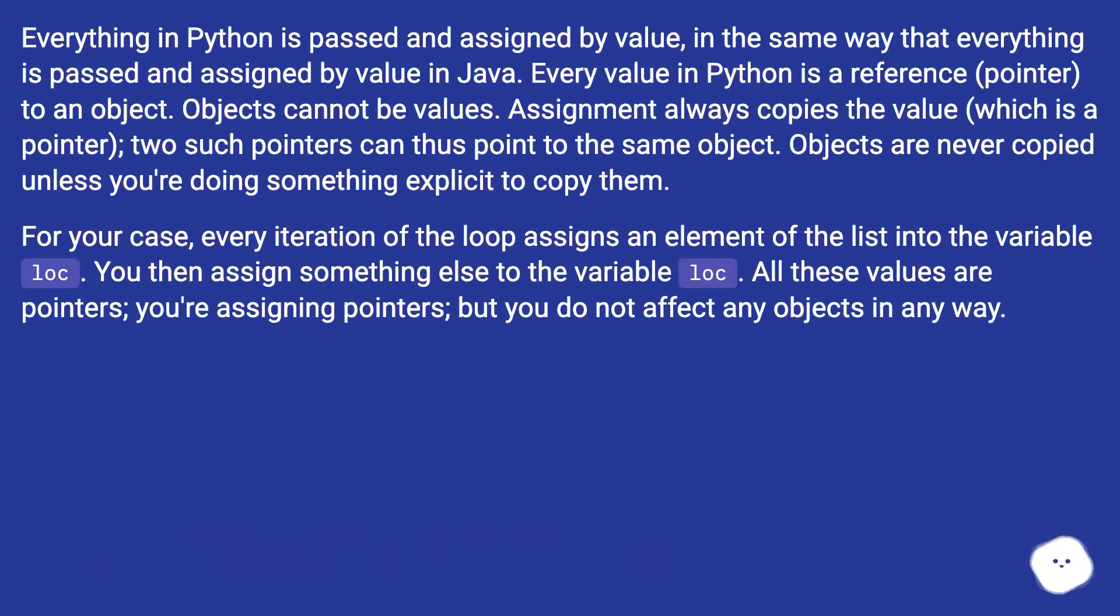Everything in Python is passed and assigned by value in the same way that everything is passed and assigned by value in Java. Every value in Python is a reference pointer to an object. Objects cannot be values. Assignment always copies the value, which is a pointer. Two such pointers can thus point to the same object. Objects are never copied unless you're doing something explicit to copy them.